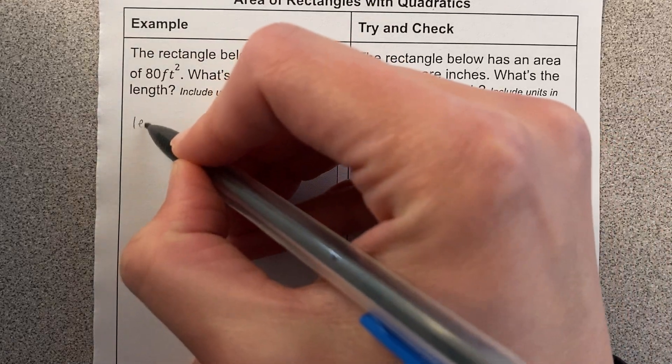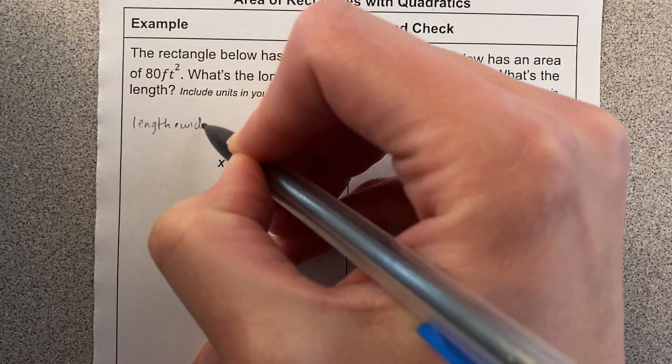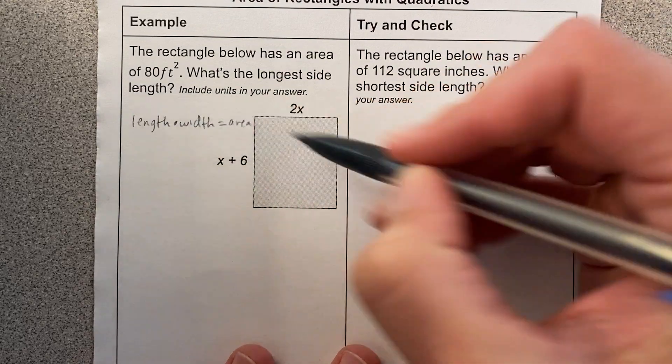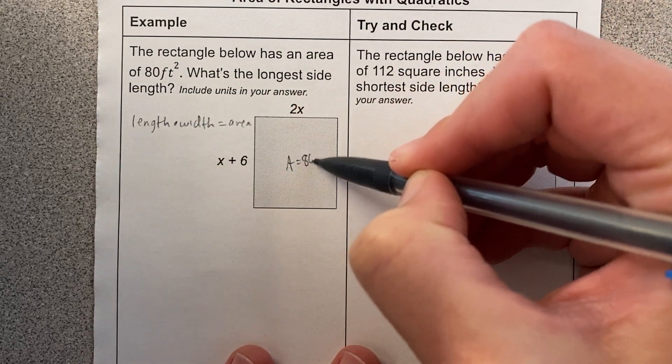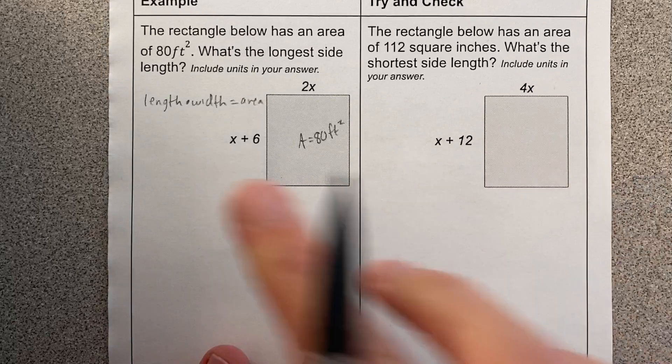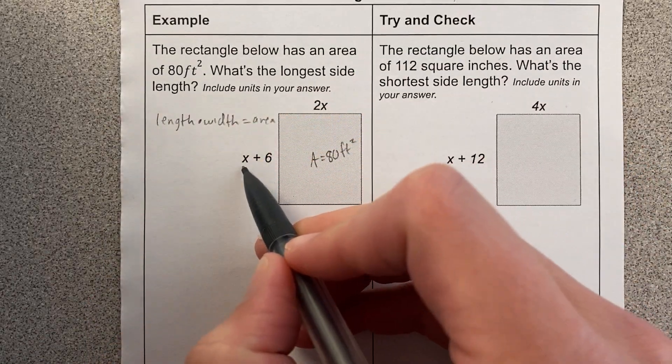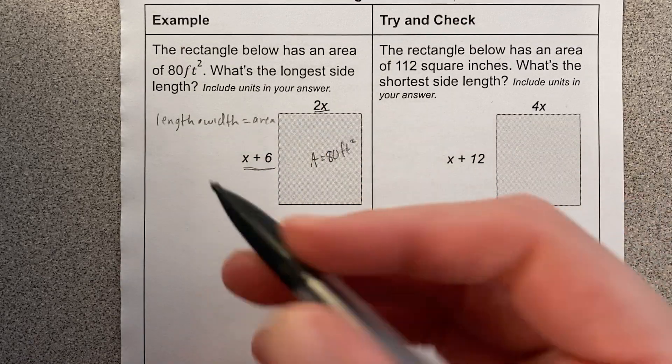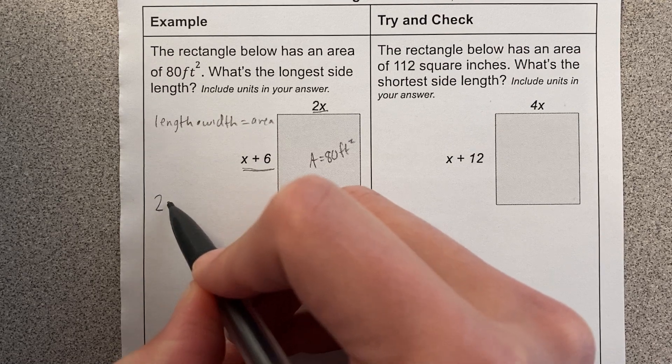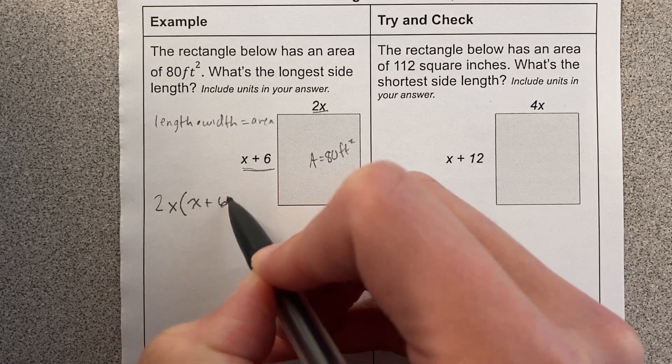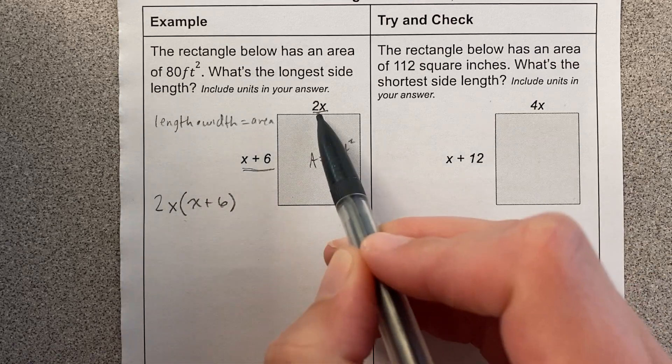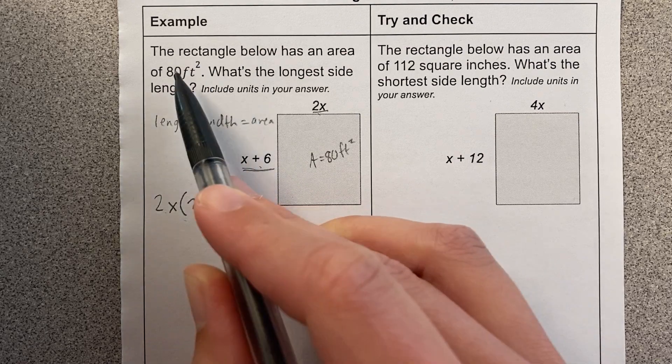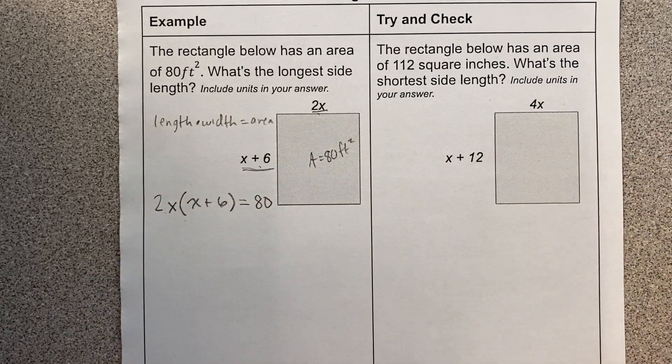We know that length times width equals area. So we know that this area equals 80 square feet. The length times the width equals the area. The length, let's say the length is, honestly it doesn't matter, right? Like this could be the length, this could be the width, it doesn't matter. But what we know is that 2x times (x + 6) equals the area. Here's our equation.